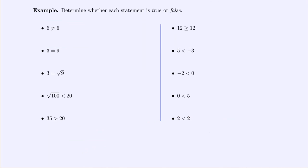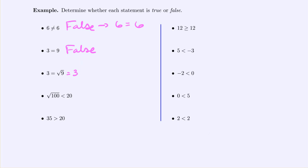Going through these: six ≠ six is false — six is equal to six. Three = nine is also false. But the next one is true because the square root of 9 is actually 3, so three equals the square root of nine. Whenever you see a complicated expression like this, simplify it with your calculator first so you can compare — this statement is true.